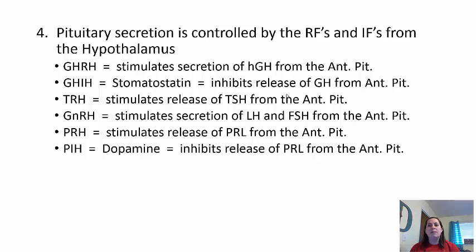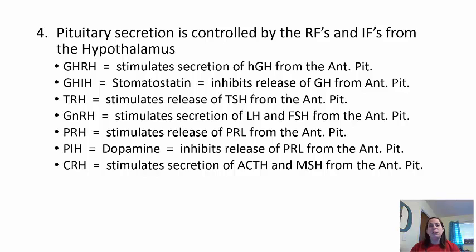Prolactin-releasing hormone stimulates the anterior pituitary to release prolactin, while the prolactin-inhibiting hormone — which is also dopamine — inhibits prolactin release. Corticotropic-releasing hormone stimulates release of adrenocorticotropic hormones and melanocyte-stimulating hormones from the anterior pituitary. The hypothalamus uses these releasing and inhibiting factors to maintain the pituitary gland releasing what is needed at different times and inhibiting hormones when they are not needed.